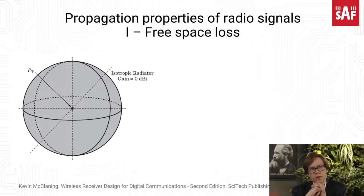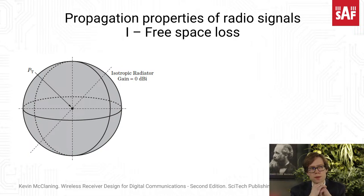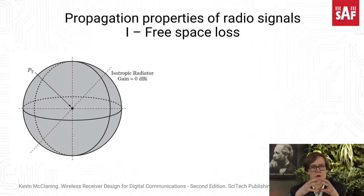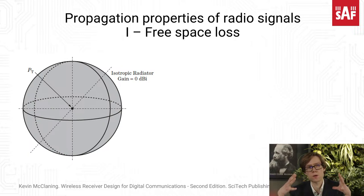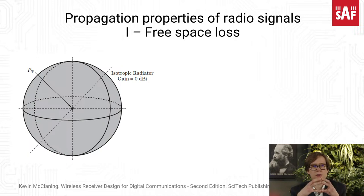The gain of an isotropic radiator is equal to zero — zero dBi. That means there is no particular direction in which the signal is stronger than in other directions, unlike a real-world antenna which has some degree of directivity. An isotropic radiator equally emits energy in all directions, so the directivity is zero and the gain is zero dBi.